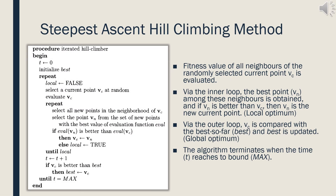A variable t and best are initialized. The outer loop starts by selecting a current point vc from the search space. Via the inner loop, fitness amounts of all neighbors of the current point are calculated with the evaluation function. The best neighbor vn is found. If vn is better than vc, then vn becomes the new current point. At the end of the inner loop, vc is expected to be the local optimum. Via the outer loop, vc is compared with the best so far, and the variable best is updated. At the end of the outer loop, vc is expected to be the global optimum.